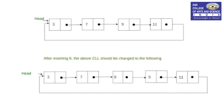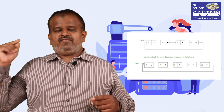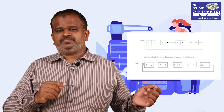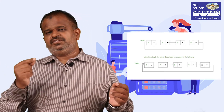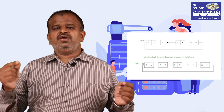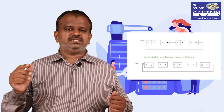Next comes the circular list. In a circular list, each and every data element — that is, the node — is partitioned into two parts, but it is connected in a circular manner. As it is connected in a circular manner, there is no first node or last node. Insertion or deletion of a node is possible easily in this circular list.